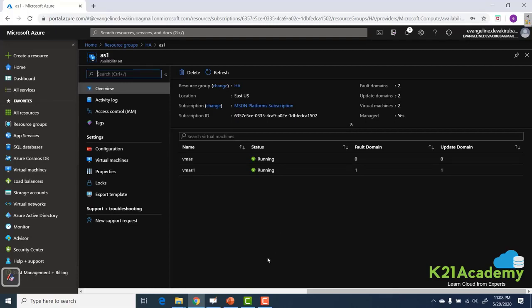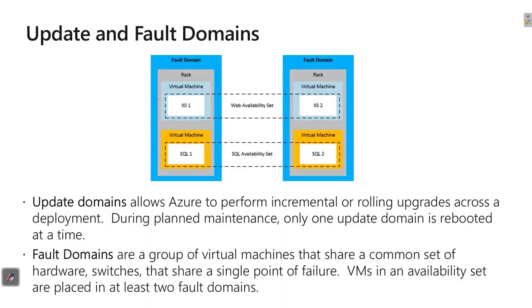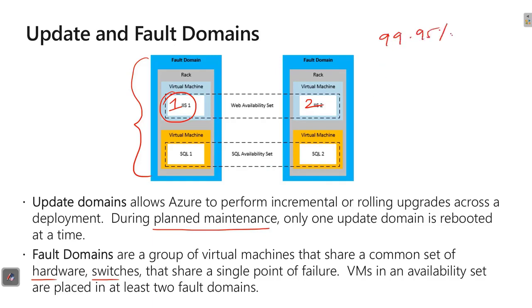Let's see how exactly it is spread — we have a PPT for it. This is exactly what we have accomplished: VM 1 and VM 2. If there is planned maintenance, only one update domain is rebooted, meaning my first VM will reboot and customers will be routed to the second VM. If there is a fault domain related problem — a hardware problem or switch problem — my VMs will not both be affected since they are in two different fault domains and two different update domains. This is how I get 99.95% availability, which means I still have four and a half hours of downtime. My customers are not okay with it — I need something better, a little more high availability.